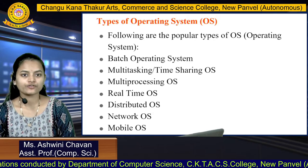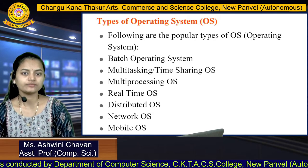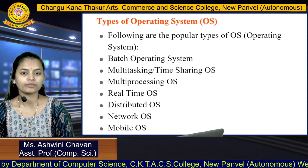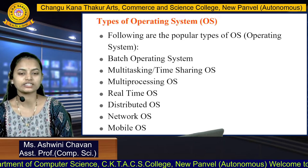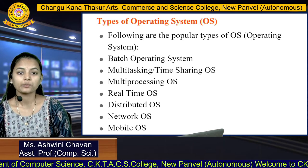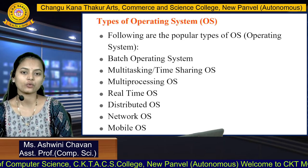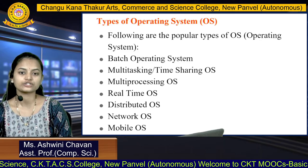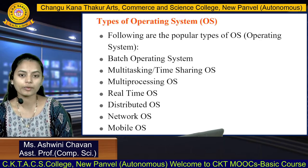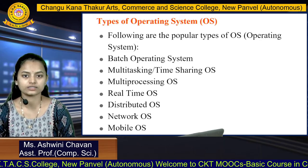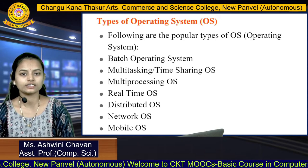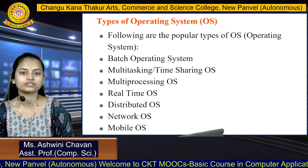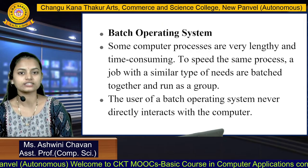There are several types of operating system: the batch operating system, multitasking or time-sharing operating system, multiprocessing operating system, real-time operating system, and distributed, network, and mobile operating system. We will see the basic things about each and every type of operating system.